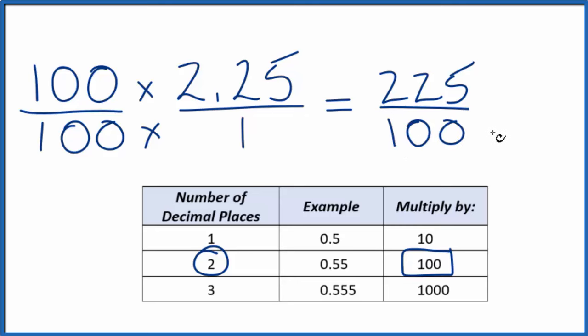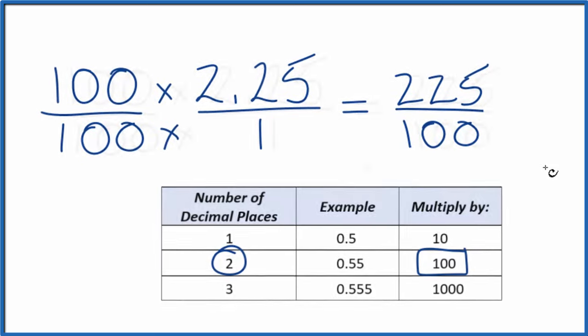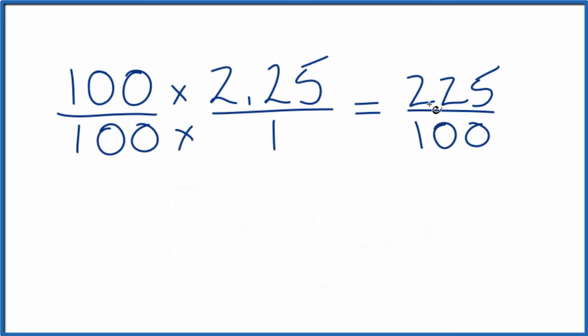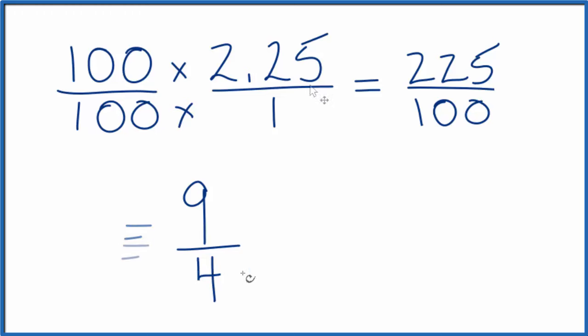We can simplify this though. Let's give ourselves some more room here. 25 would go into 225 nine times, and then 25 goes into 100 four times. So we could say that 2.25 is, as a fraction, 9 fourths.